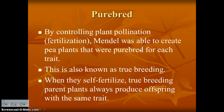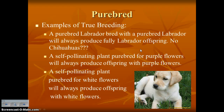Mendel could control plant pollination — he could take pollen from one plant and put it onto the flower of another, controlling which traits appeared. He grew pea plants that were purebred for each trait, called true breeding. When true-breeding plants self-fertilize, they always produce offspring with that same trait — just like a purebred Labrador bred with a purebred Labrador will only produce Labrador puppies, not a Chihuahua.